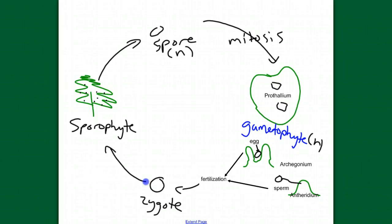And the gametophytes haploid, as are the gametes. So the gametes are made by mitosis also. And fertilization results in a diploid zygote. And the diploid zygote grows by mitosis and cell division into a diploid sporophyte. Diploid sporophytes make haploid spores through meiosis.